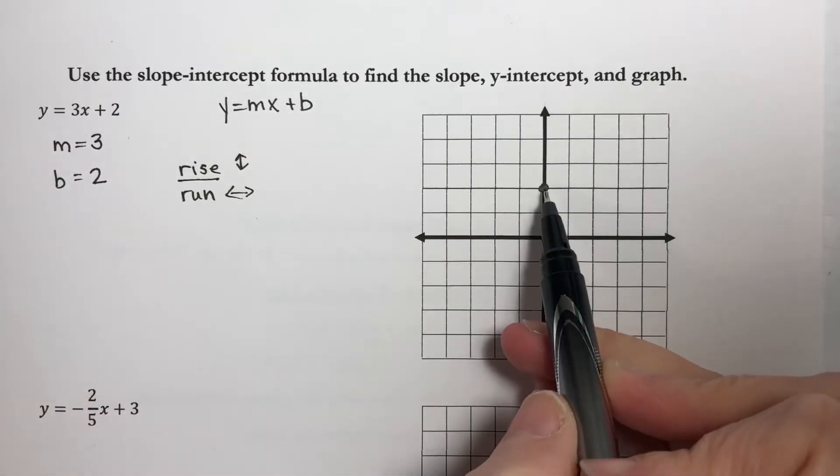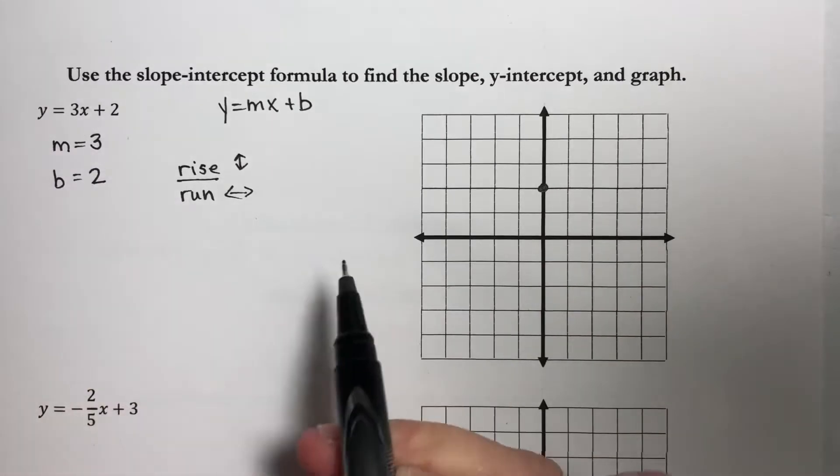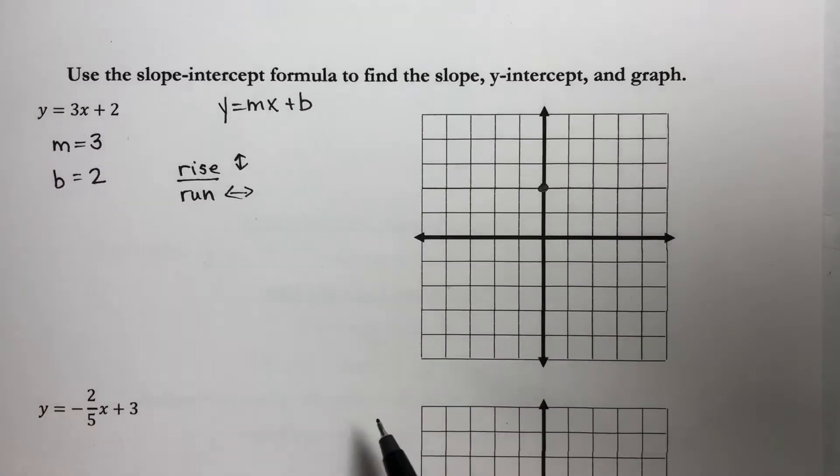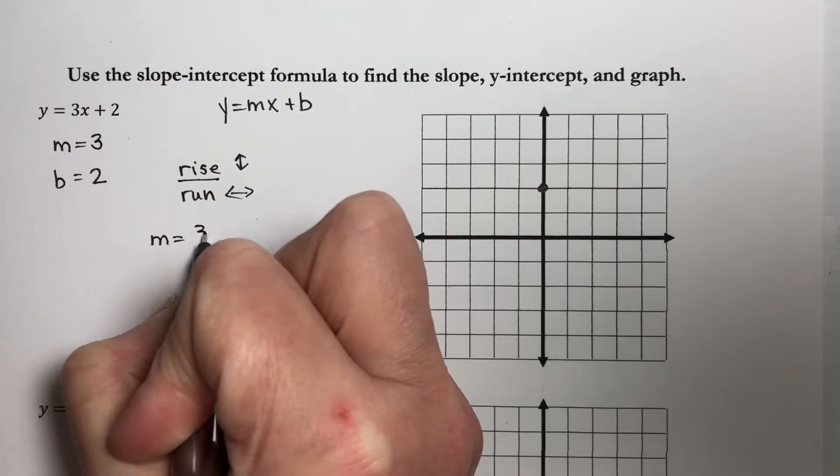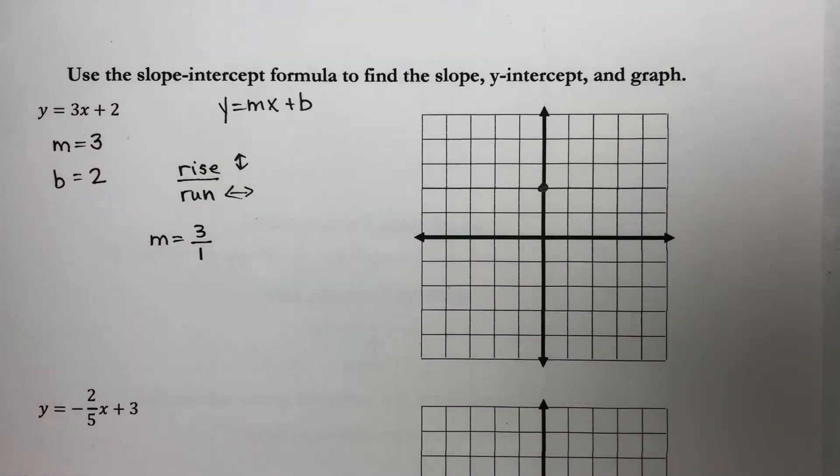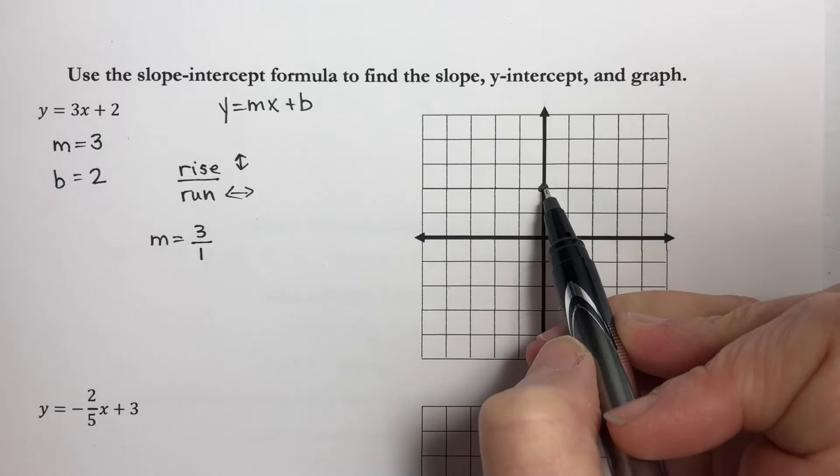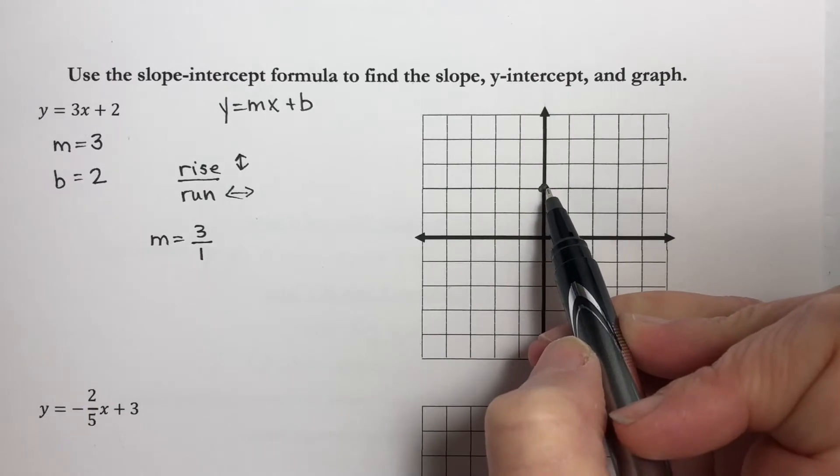So you're going to be starting from this starting point, and your slope gives you the directions to another point. Now our slope is 3, which is the same as 3 over 1. So from my starting point,